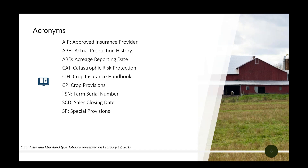An FSN is a farm serial number. SCD is sales closing date — that's also the application deadline typically. And SP is the special provisions, sometimes called SPOIS — S-P-O-I-S — special provisions of insurance. Some people even refer to that as the actual policy because there are county-specific details within the special provisions.